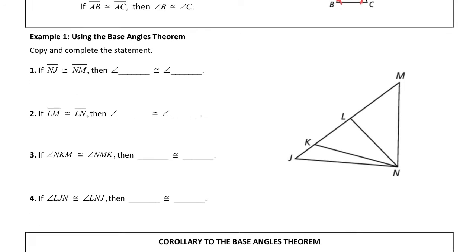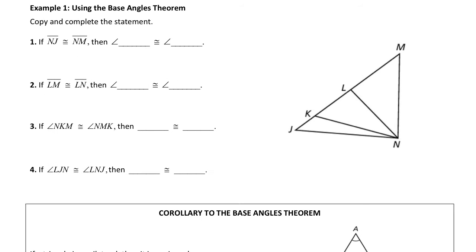So in example one, we are just going to get some practice using that base angles theorem. I'm giving you different situations. If I say NJ and NM are congruent, NJ is here, NM is here. So which angles are congruent?